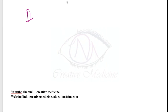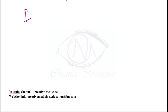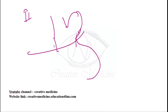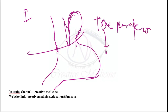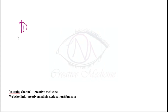Type 2 is true paraesophageal hernia, also called rolling hernia. Only the fundus of the stomach herniates into the thorax, while the rest of the stomach and the gastroesophageal junction remain in the abdomen.